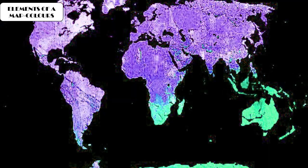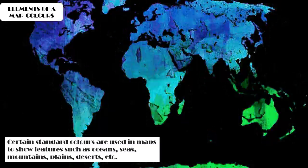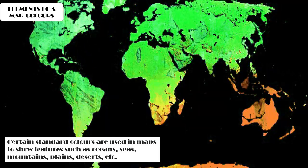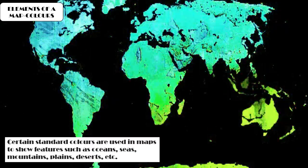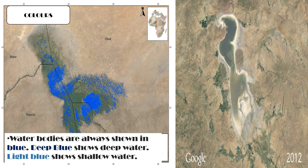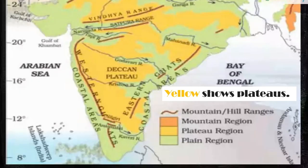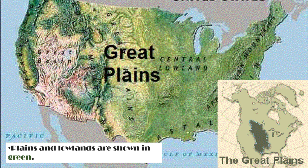The next element is colors. In a map, we use certain standard colors to show the natural features of the earth's surface such as oceans, seas, mountains, plains, and deserts. Water bodies are always shown in blue — deep blue for deep water and light blue for shallow water. Mountains and highlands are shown in brown — dark brown for high mountains and light brown for highlands and hills. Plateaus are shown in yellow, while plains and lowlands are shown in green.